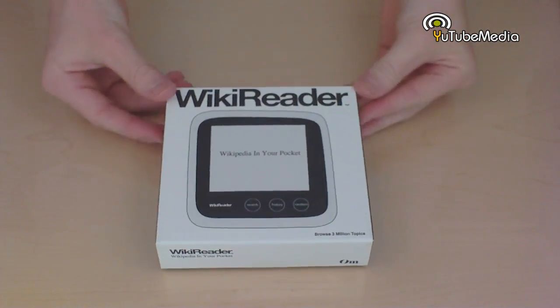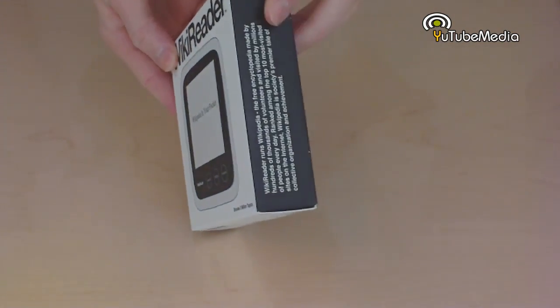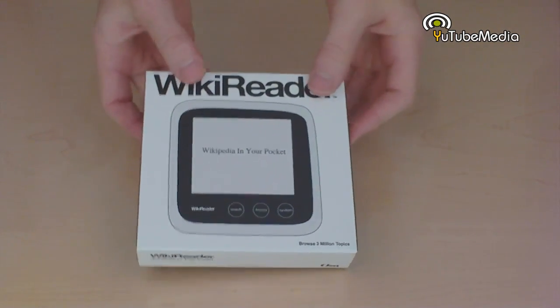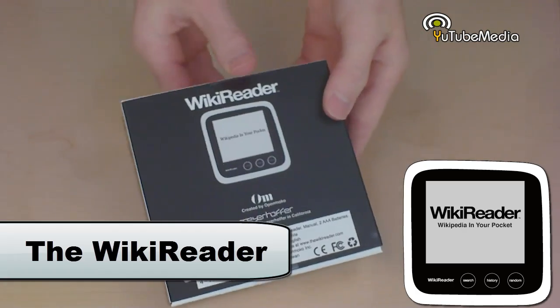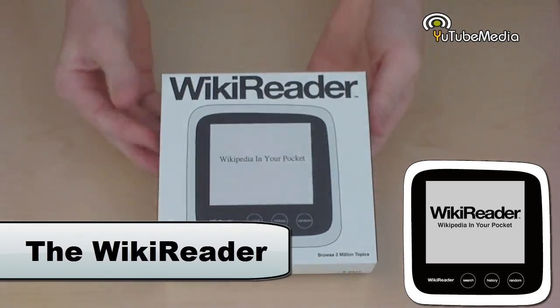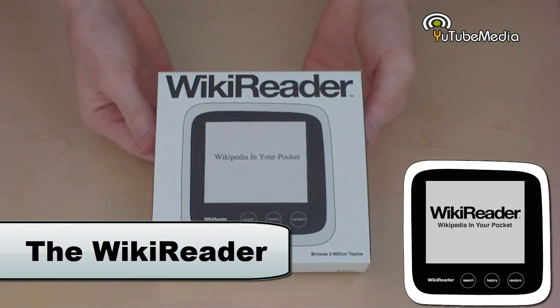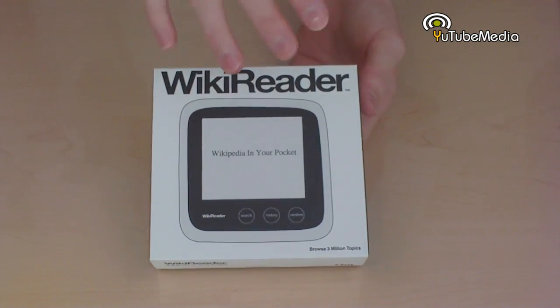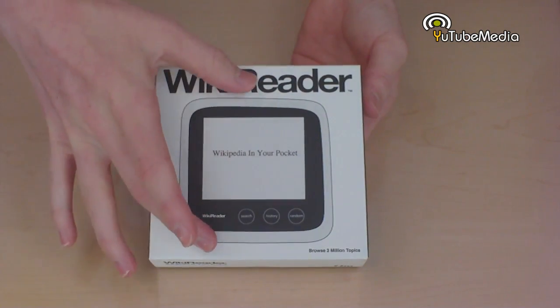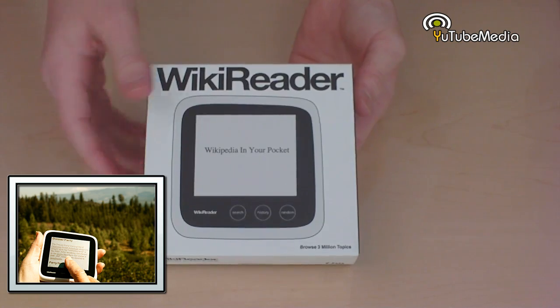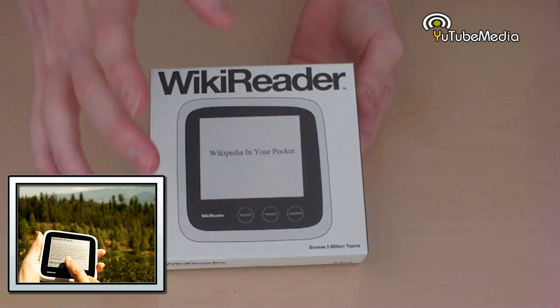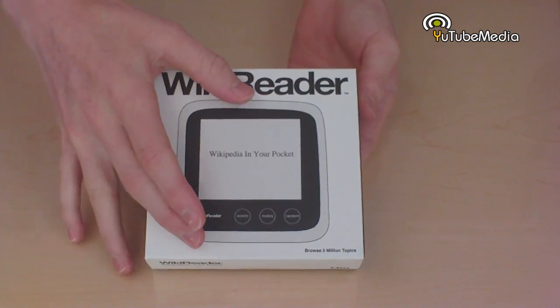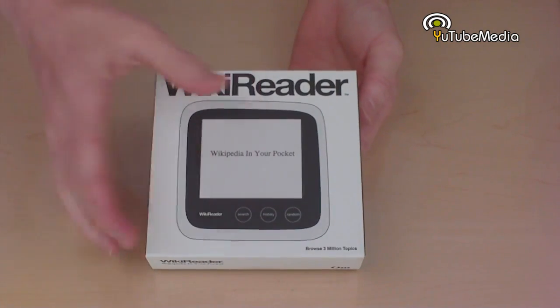Hey everyone, this is YouTube Media and this device that I have here with me is a portable Wikipedia reader that I'm going to be unboxing and reviewing today. This is called the WikiReader. It has everything on Wikipedia except it's all in this little device without any internet. It's all based on memory and has nearly 3.1 million articles all from Wikipedia on this little device.